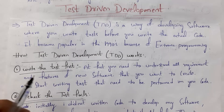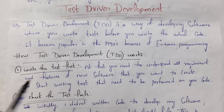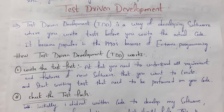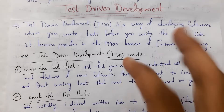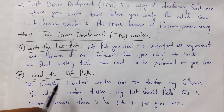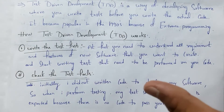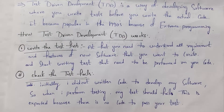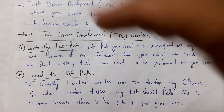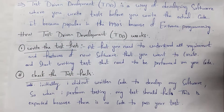How TDD works: The first step is to write the test first. You need to understand all requirements and features of the new software, then write test code for it — understanding how the software must look and behave. The second step is to check that the test fails. Initially there is no software code written, so whenever you perform testing it must fail. This is expected because there is no code to pass the test. After writing complete test code you run the tests and confirm they fail since no application code exists yet.